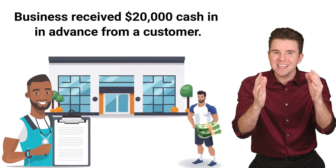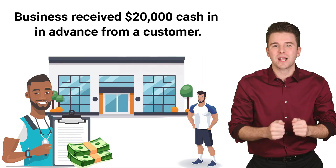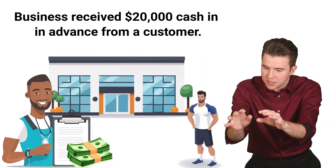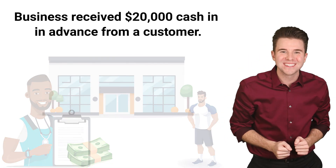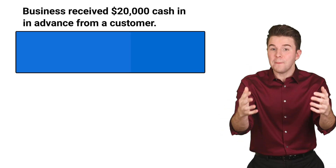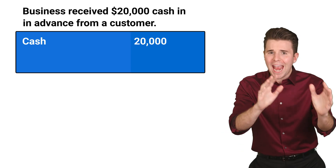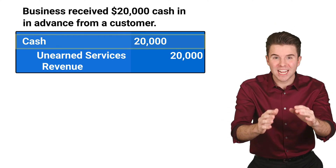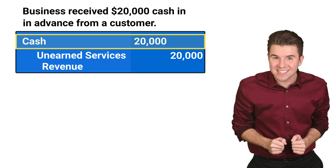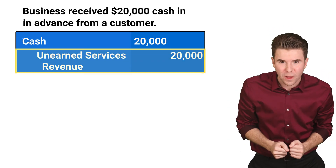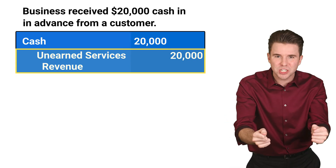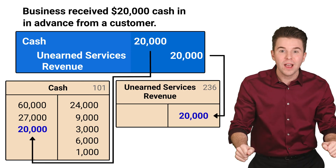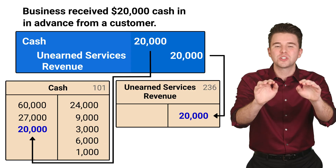Next, the company receives $20,000 cash in advance from a customer. In return, the company agrees to provide fitness training services to the customer over the next few months. To record this entry, we debit cash for $20,000 and credit unearned services revenue for $20,000. We debit cash to recognize the increase in that asset, and we credit and increase unearned services revenue to recognize the obligation we have to provide those services. We do not get to recognize any revenue until we actually provide those training services.